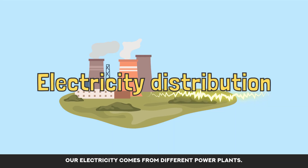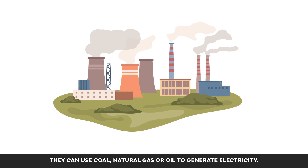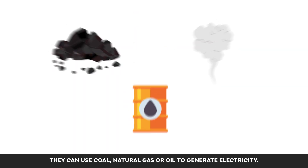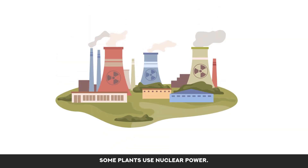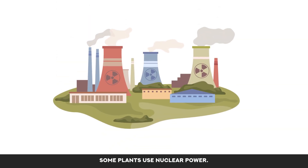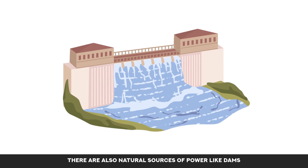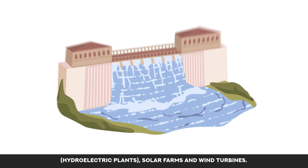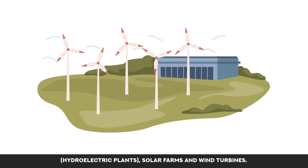Our electricity comes from different power plants. They can use coal, natural gas, or oil to generate electricity. Some plants use nuclear power. There are also natural sources of power like dams, hydroelectric plants, solar farms, and wind turbines.